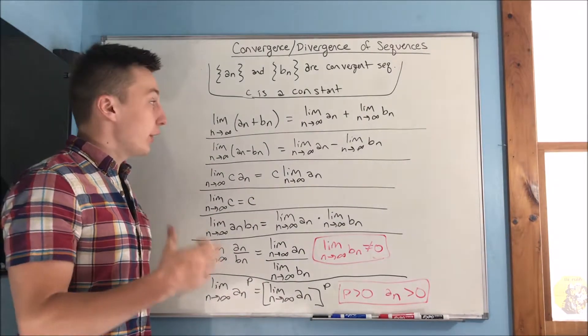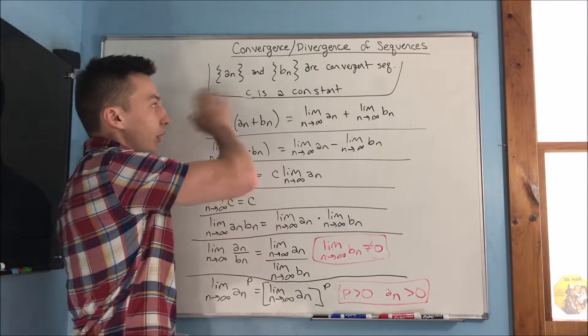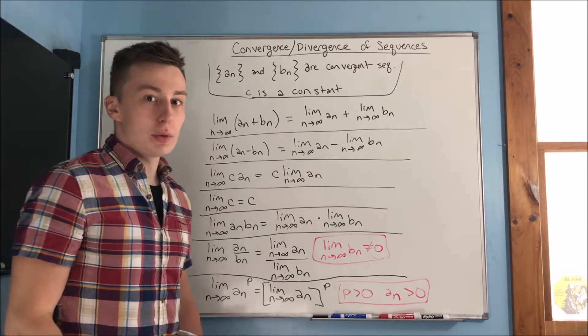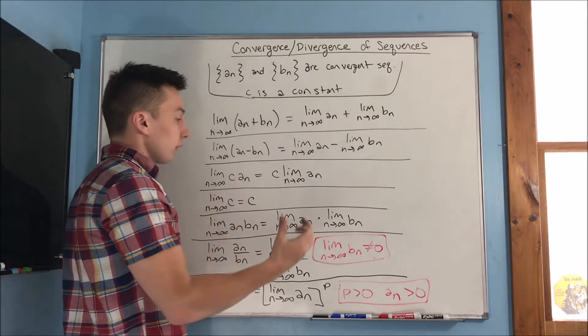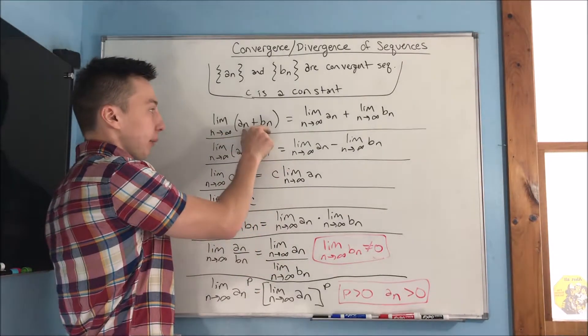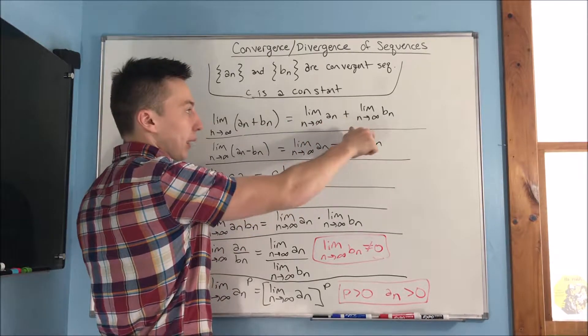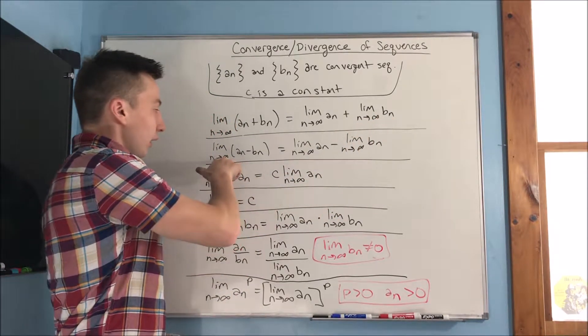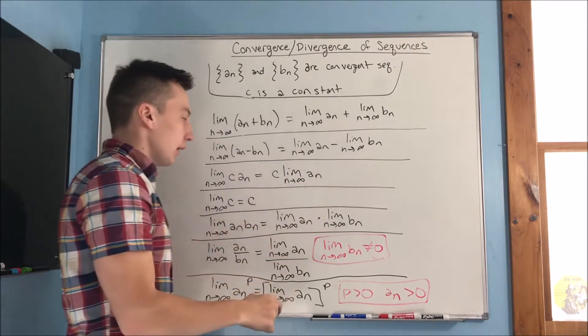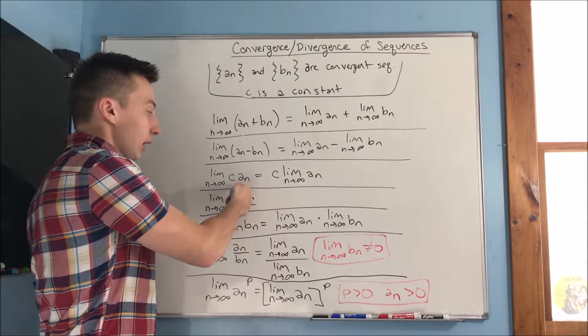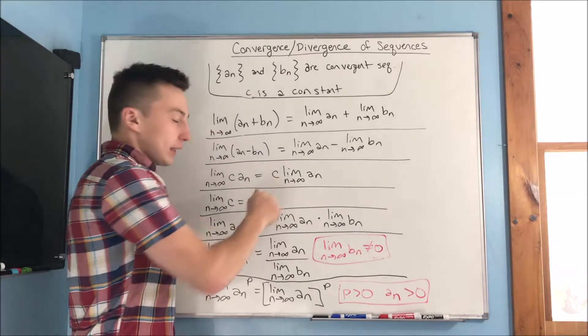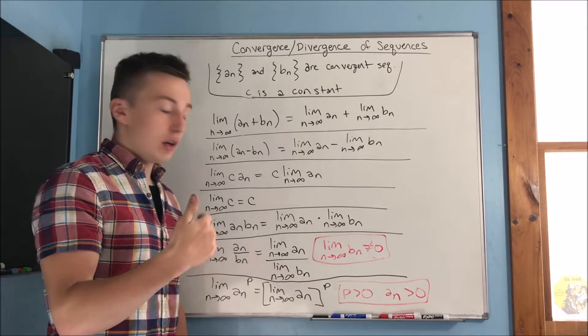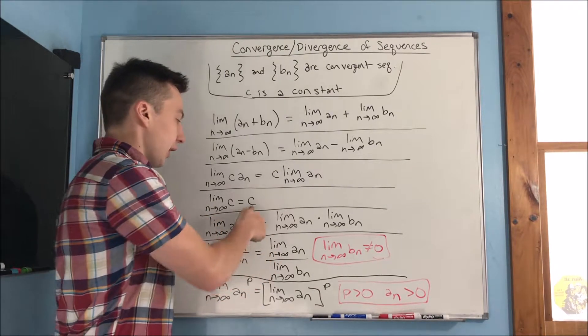Alright, so here are some limit laws that you need to know. These are just saying that a sub n, b sub n, they're going to be convergent sequences, and c is a constant. So of course, you probably know most of these already, but just to go over them for sequences, if you have the limit as n approaches infinity of a sub n plus b sub n, then you can break apart the limit to have a sub n and then b sub n separately added together. If you have them subtracted, you could do the same thing. If you have the limit as n approaches infinity of a constant times a sequence, you can pull that constant out. So if you just have the limit as n approaches infinity of a constant, well, the constant is independent of the actual variable, so you're just going to end up with a constant.